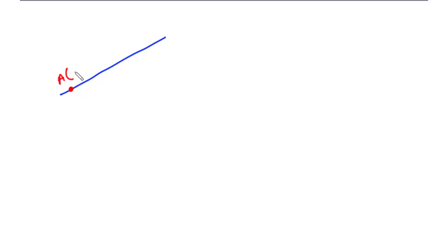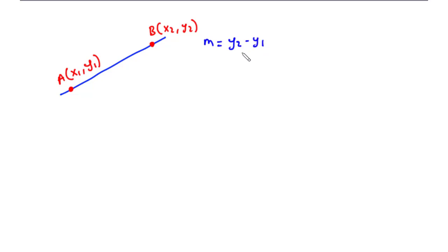Gradient is basically the measure of the steepness of a straight line. The bigger the gradient, the steeper the line. Given two points lying on a straight line — point A with coordinates (x1, y1) and point B with coordinates (x2, y2) — the gradient of the line joining the two points is given by m equals y2 minus y1 divided by x2 minus x1.